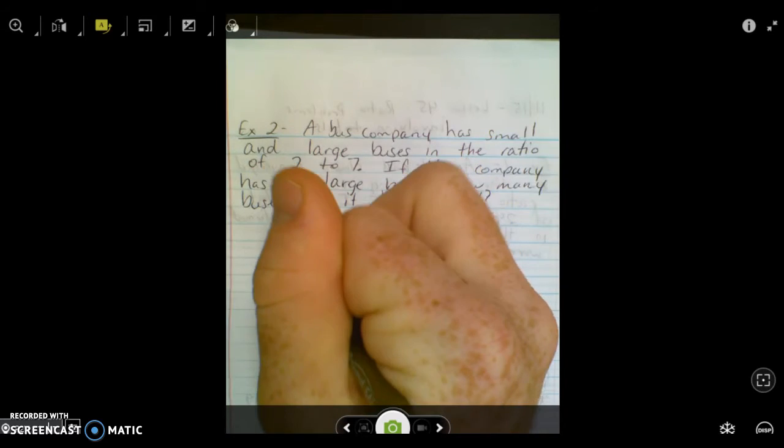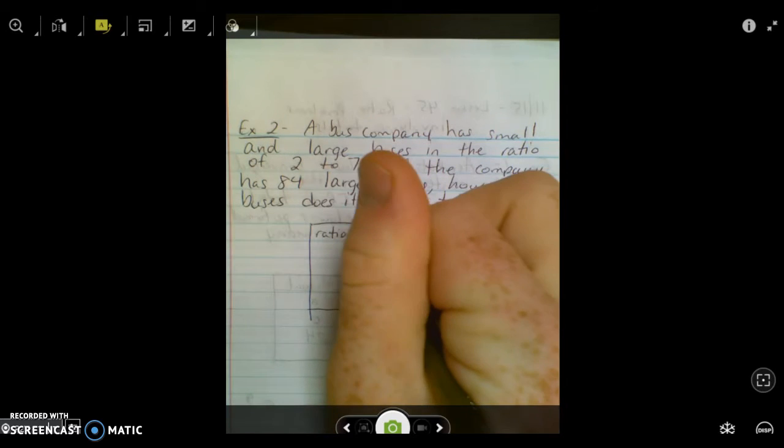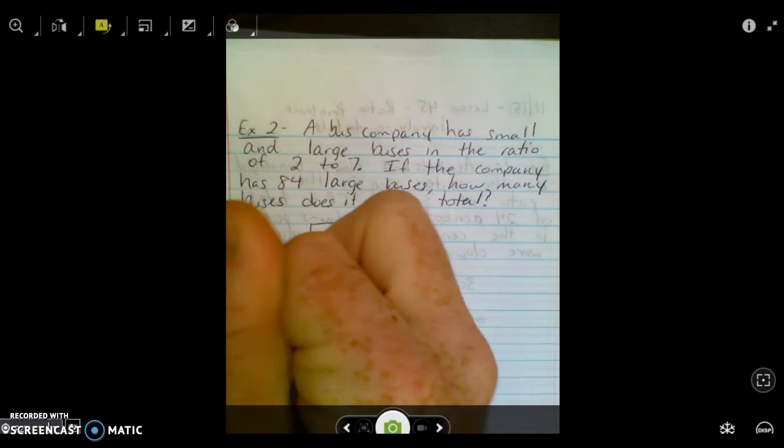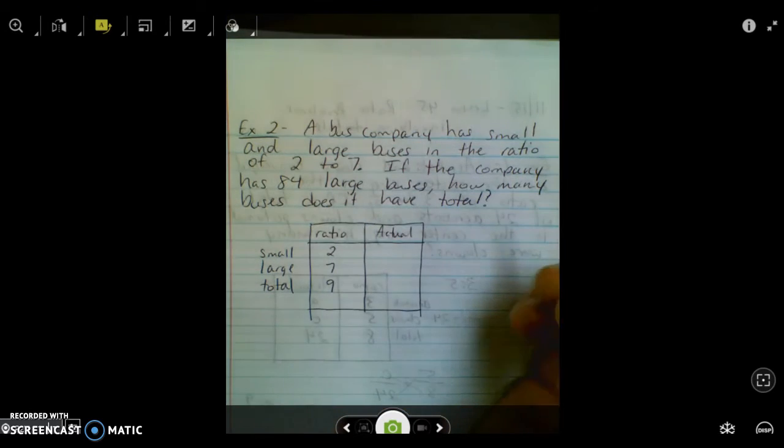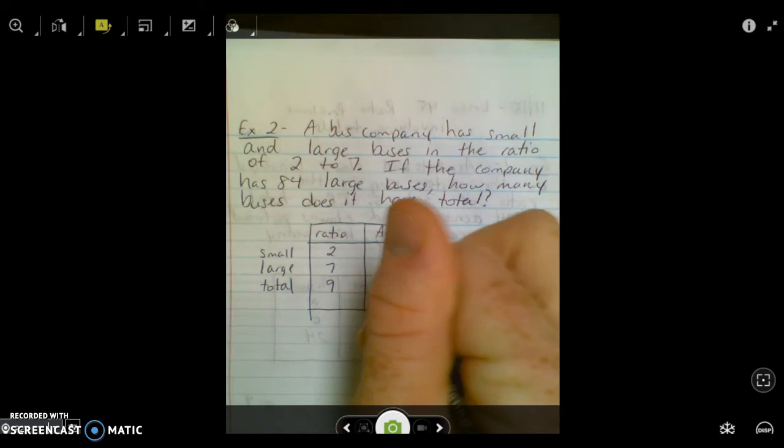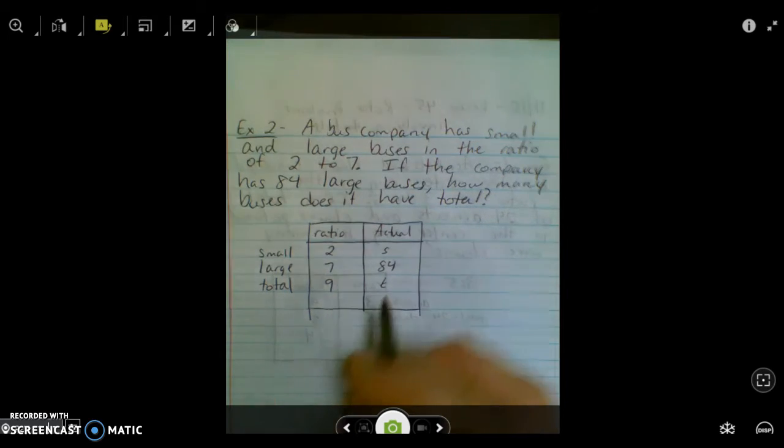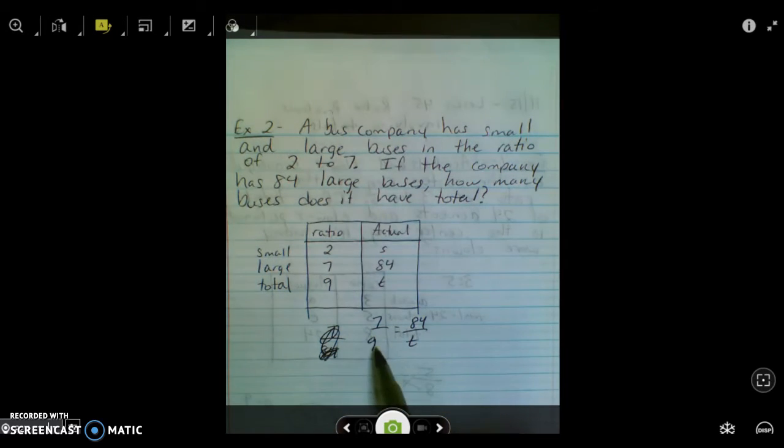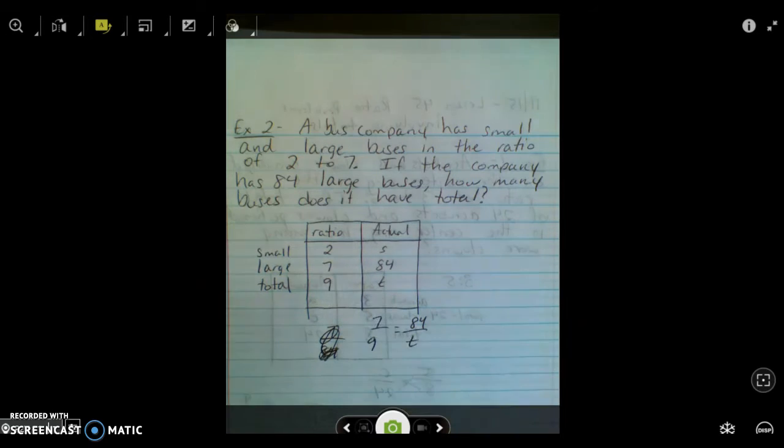Or again, using a table like from problem one, the ratios, we've got the actual. We've got small buses, large buses, and total. And two small to seven large, making a total of nine. I don't know how many small buses there are. We know that we have 84 large, and we're looking for the total. So what are we going to do? Set up a ratio. Set up a proportion. Seven over nine equals 84 over t. Because nine represents the total. Remember, all these numbers in a ratio are connected. Two to seven, small to large. So if I said two to nine, that'd be small to total. Seven to nine is large to total, so on and so forth.